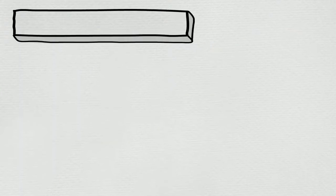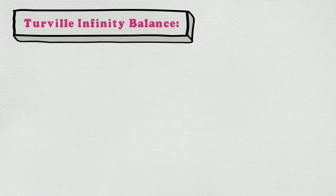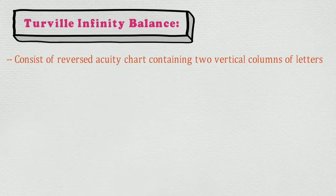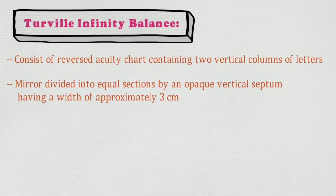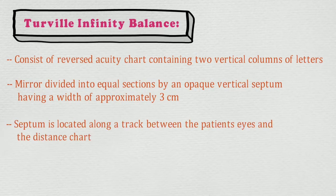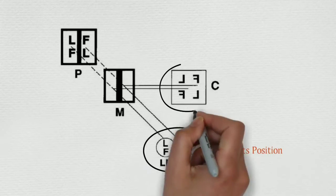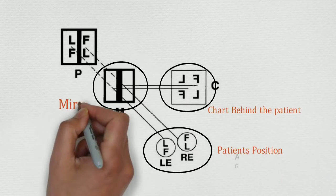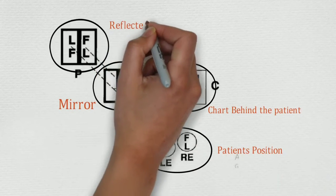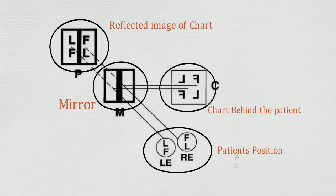The Turville Infinity Balance Test consists of a reversed acuity chart containing two vertical columns of letters, divided into equal sections by an opaque vertical septum having a width of approximately 3 cm. The septum is located along a track between the patient's eye and the distance chart. In this figure, the patient position, the chart behind the patient, the mirror, and the reflected image of the chart are shown.